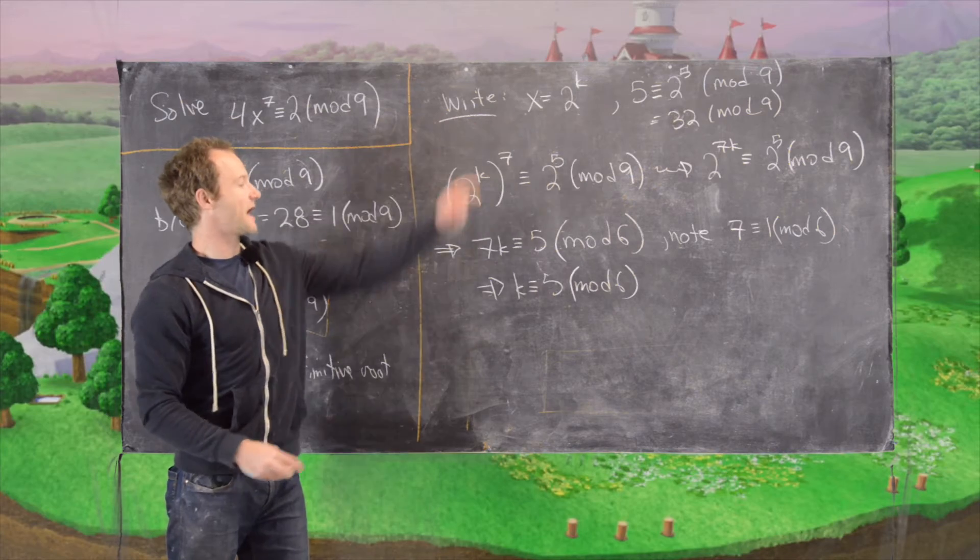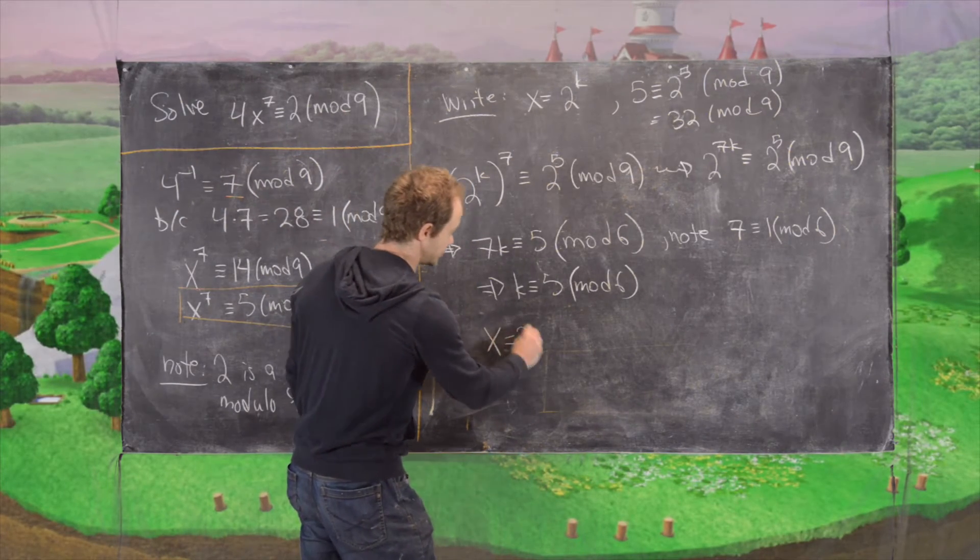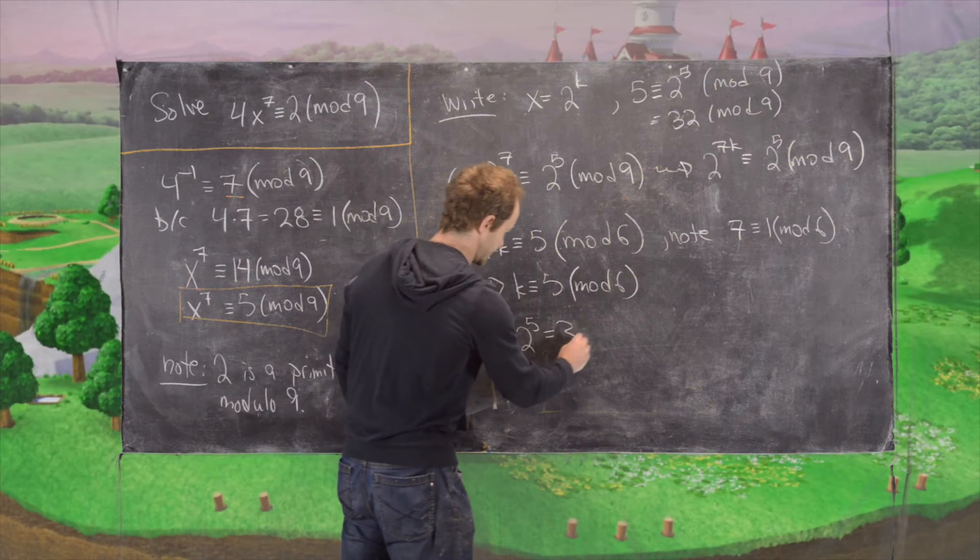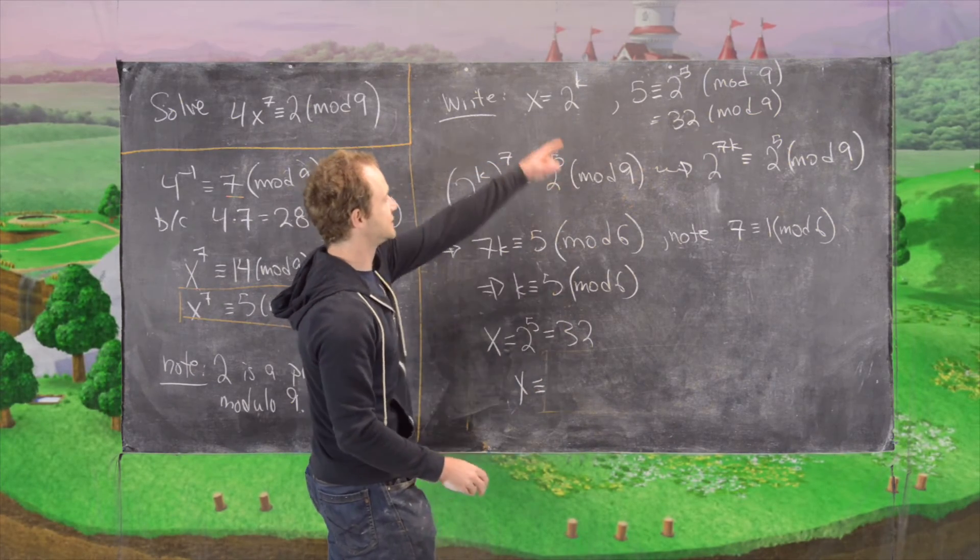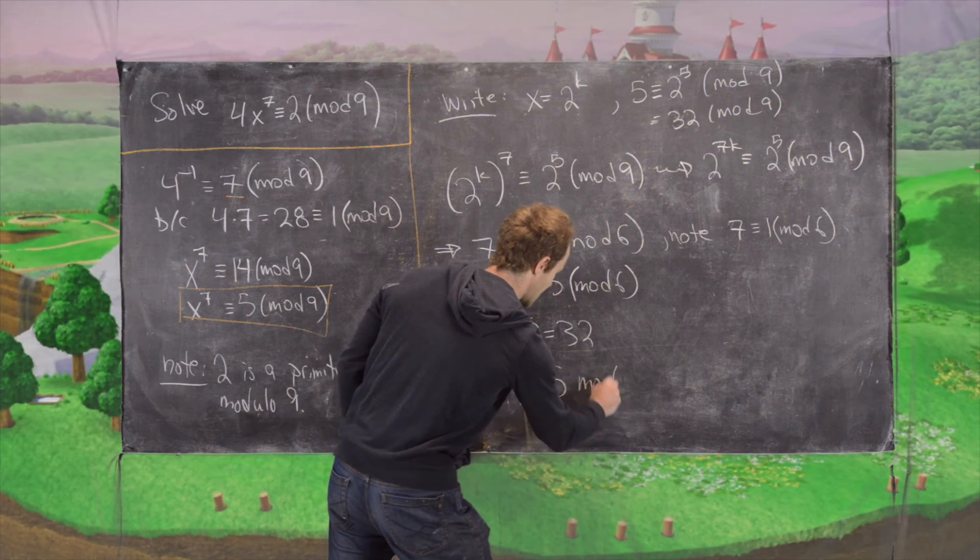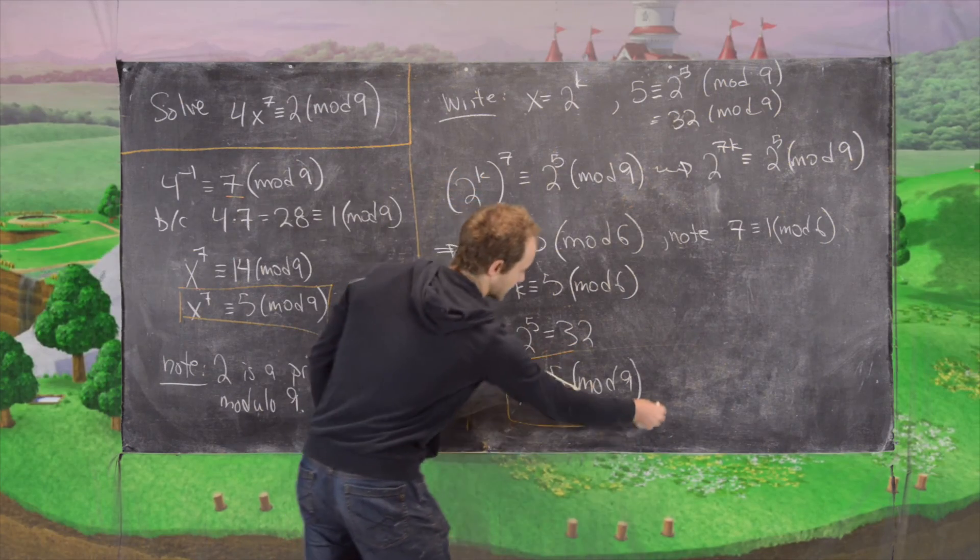So now we go back to our original. That tells us that x is equal to 2 to the 5 which is 32, which tells us that x is congruent to, remember 32 was 5 mod 9. So we have our final solution.